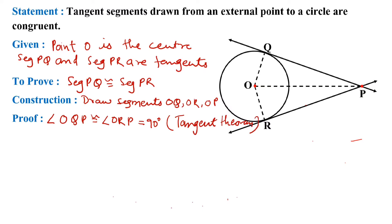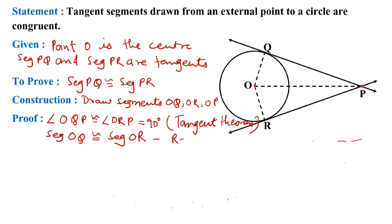What else is congruent in this figure? OQ is a radius and OR is also a radius of the same circle. We know that all radii are congruent, so seg OQ is congruent to seg OR, as they are radii of the same circle.